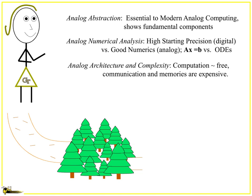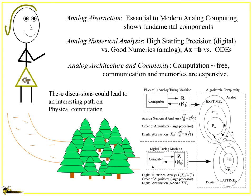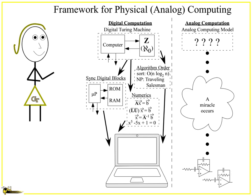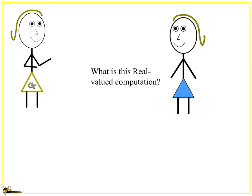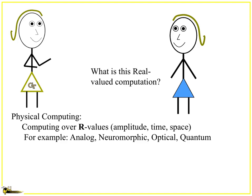Once you have this framework, it leads down another path — into a forest of knowledge — and the question of what physical computing means. We've fallen into an interesting computing space driven by these ideas about Turing machines. You can begin to build an infrastructure that looks very similar to digital computing, now in physical computing. And you can think about what the higher-level dual to a digital Turing machine is — that looks like an analog Turing machine. Real-valued computation is just physical computing: computing over real values, like analog, neuromorphic, optical, and quantum computing.